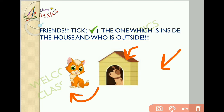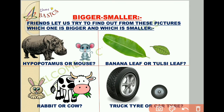Now friends, we move on to another interesting topic. Now we will learn how to compare different sizes together. Let us try to find out from these pictures which one is bigger and which one is smaller. Look at the picture — there are two animals. Are they the same in size? No, they are of different sizes. This is a hippopotamus, which is bigger than the mouse, whereas the mouse is smaller than the hippopotamus.